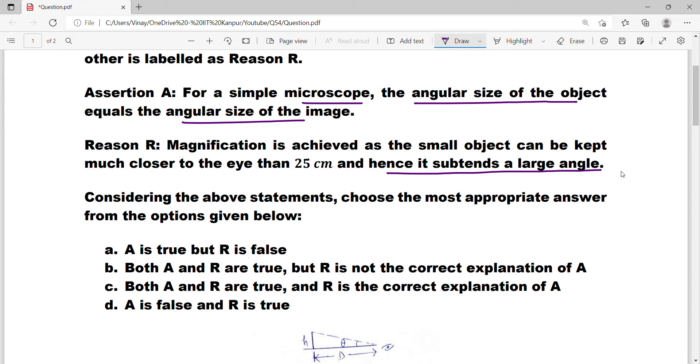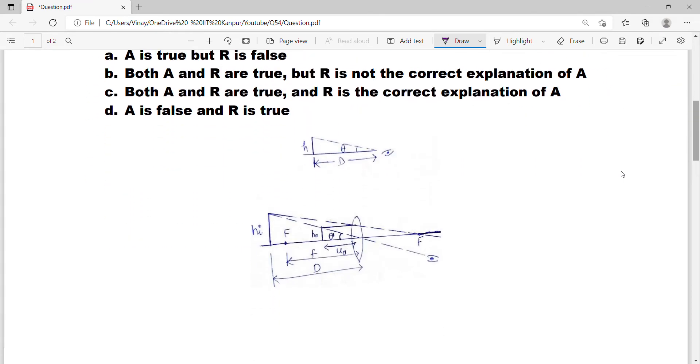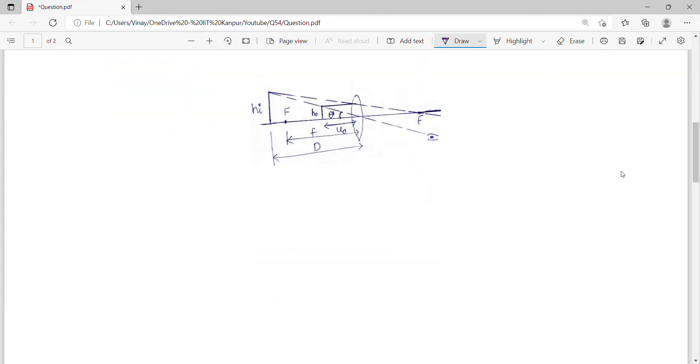You have to break this statement to understand this. In assertion and reason questions, firstly try to know whether these statements are individually correct. If individually the assertion and reason are correct, then you jump to the next step, which is to find whether the reason explains the assertion or not. In a simple microscope, we have a convex lens. You put the object between the focus and optical center, somewhere between here and here, less than the focus.